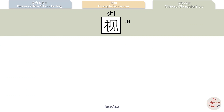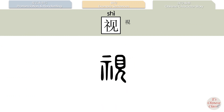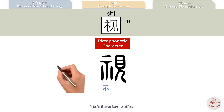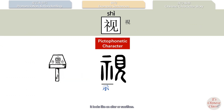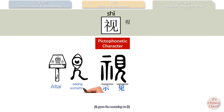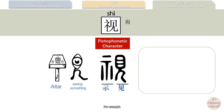In ancient times, 视 was written in an older form. It's a pictophonetic character. The left part is 士, which looks like an altar for sacrifices — 士 gives the pronunciation. The right part is 见, which means seeing something — 见 gives the meaning. The original meaning of 视 is to see.